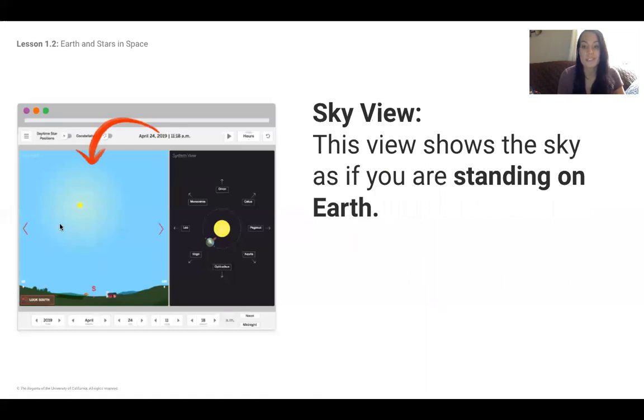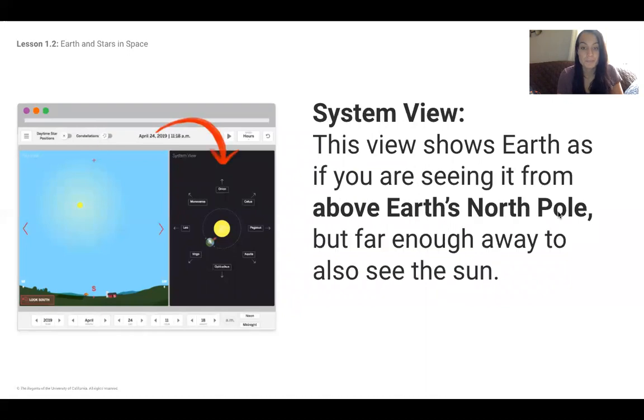On the left here, you'll see the sky view. This view shows the sky as if you're standing on Earth. The system view shows Earth as if you were seeing it from above the North Pole, but far enough away so you can also see the sun.